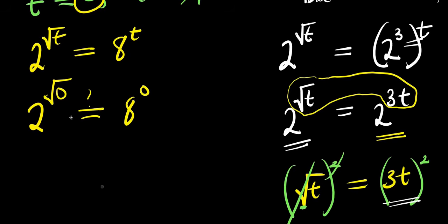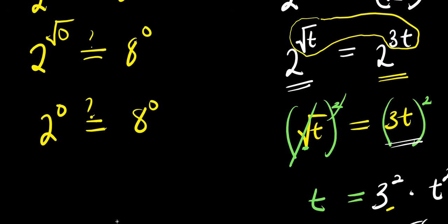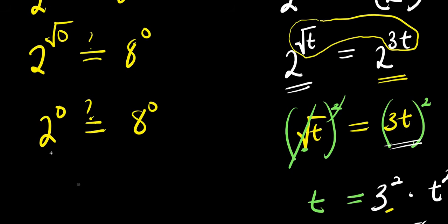Square root of 0 is 0, so you have 2 to the power of 0 and 8 to the power of 0. Any number raised to the power of 0, with the exception of 0 itself, equals 1. So this gives 1 equals 1, which proves t equals 0 is correct.